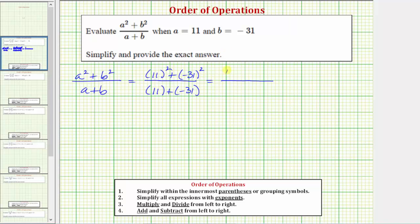11 squared is equal to 121, plus the square of negative 31, is equal to negative 31 times negative 31, which is 961. In the denominator, we have 11 plus negative 31, which equals negative 20.